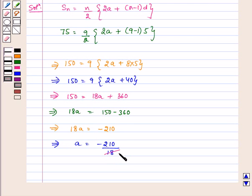Now it cuts by 9 and 210 gets cancelled by 2 and we get here 70. Now 9 gets cancelled by 3 and we get here 3 and similarly 70 gets cancelled by 3 and we get here 35 which is equal to minus 35 by 3.